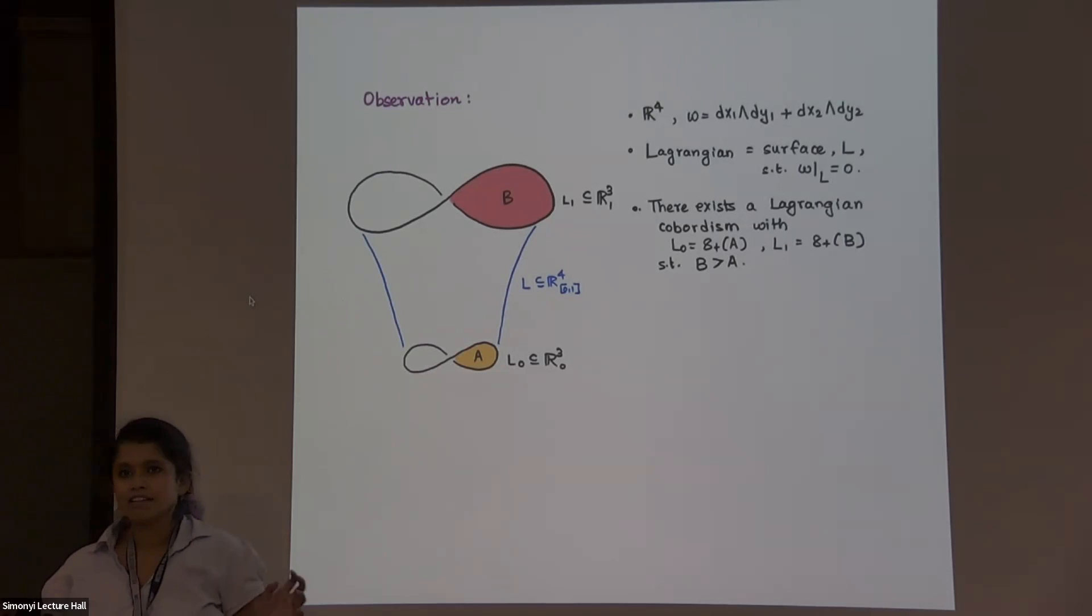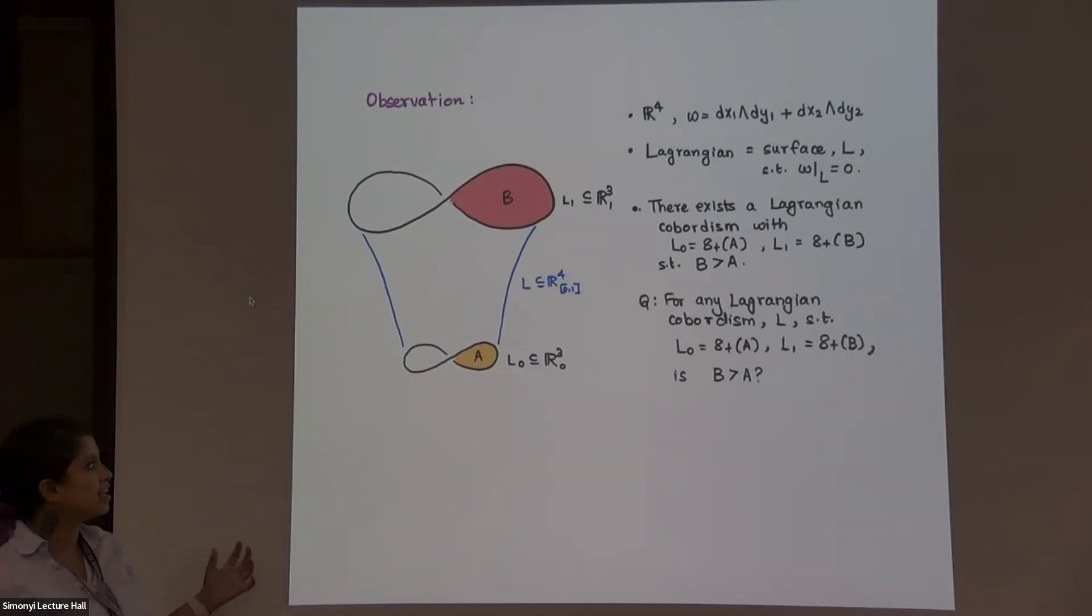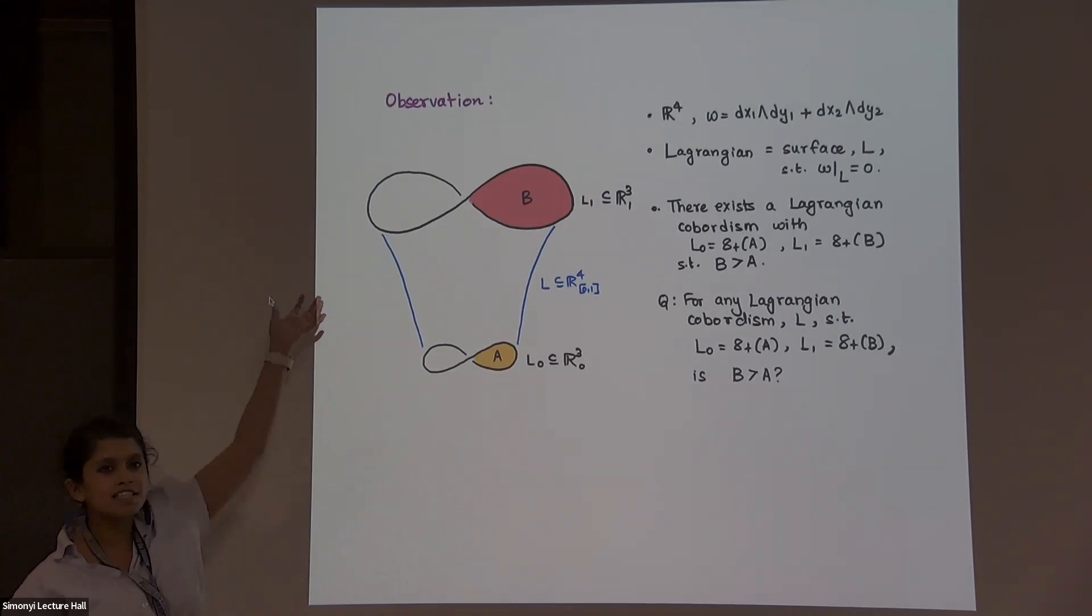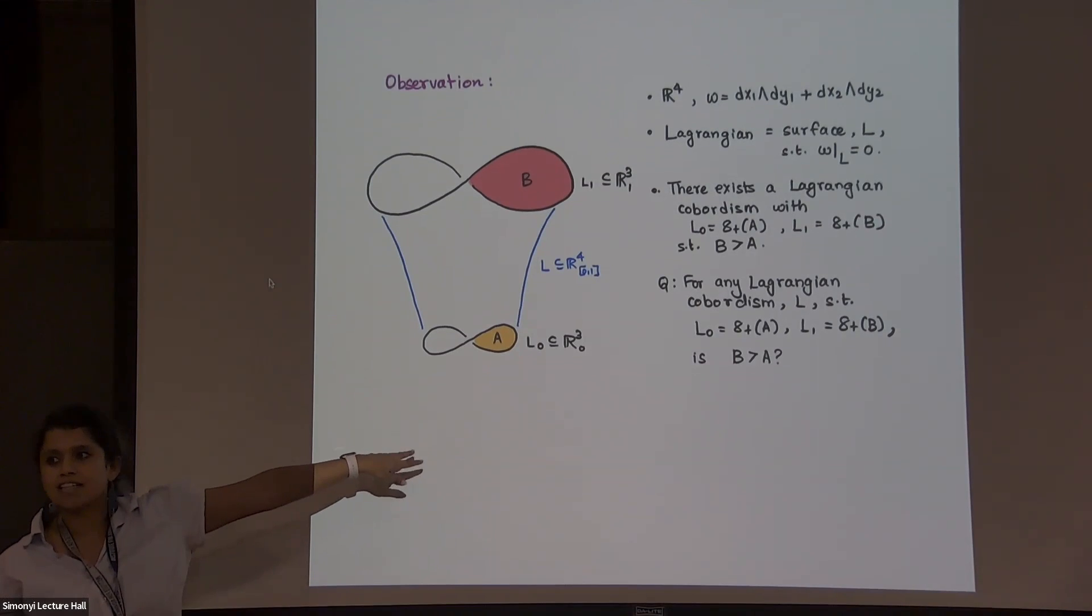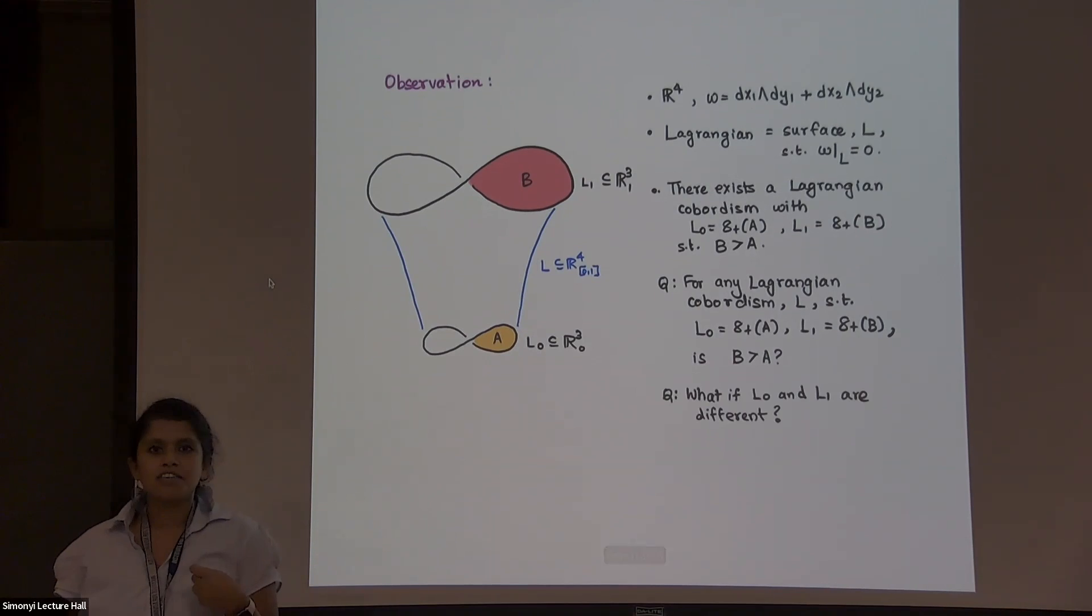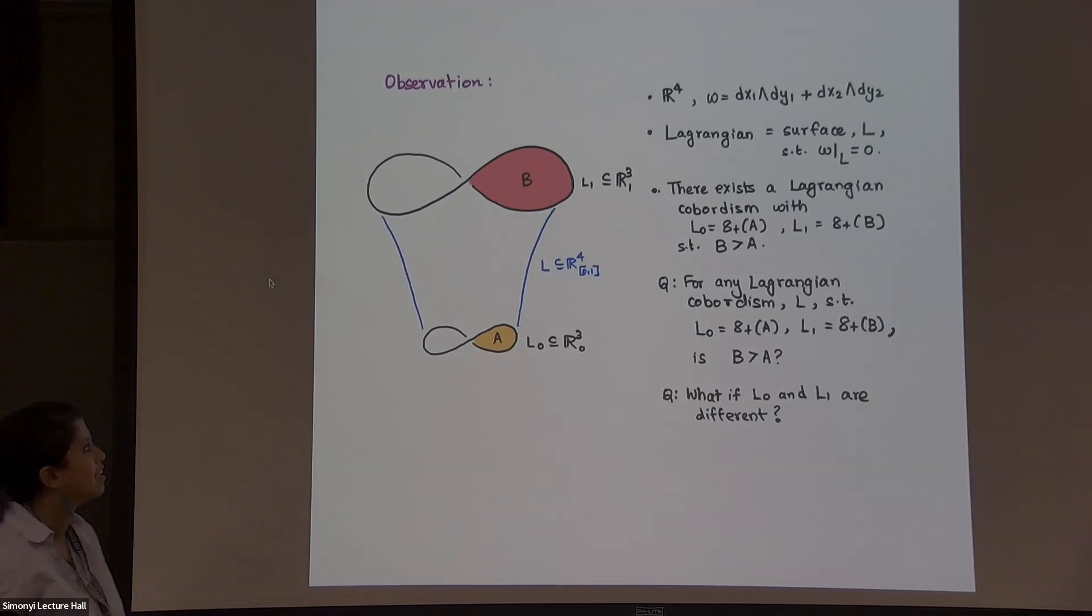So you can write this Lagrangian down in whatever equations you like. So then you can ask questions: for any Lagrangian cobordism, if the boundaries look like this with some area A and B, will B always be greater than A? And you could also ask, what if these slices look slightly different? What if I change the crossings? What if I draw a trefoil instead of an unknot? What happens? So this is a question I've been obsessing with for some time now.